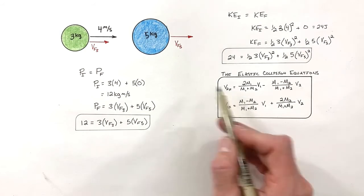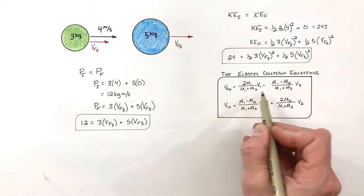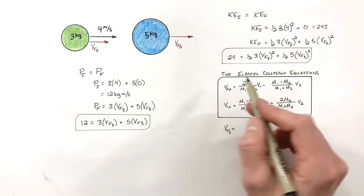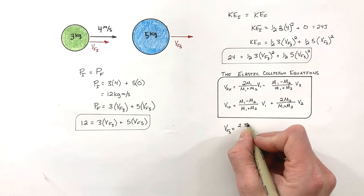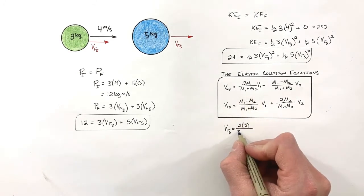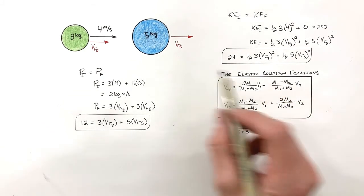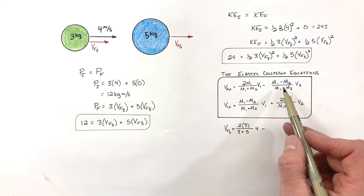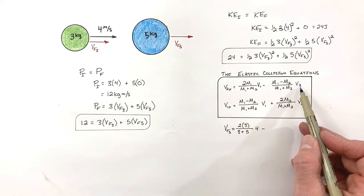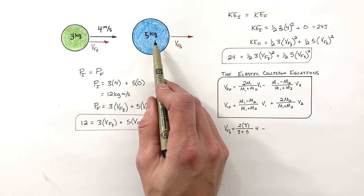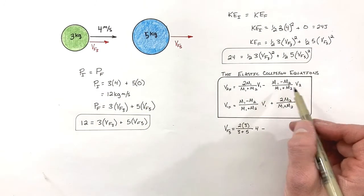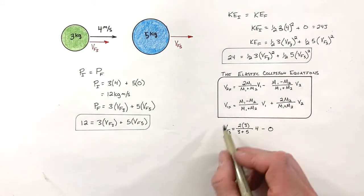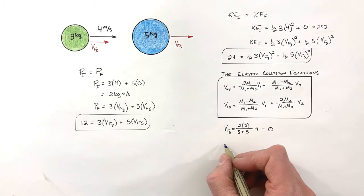Let's find the final velocity of object two — the five kilogram ball. If the five kilogram ball is object two and the three kilogram ball is object one, we plug in: two times mass one (2 × 3) over the sum of the two masses (3 + 5), multiplied by the initial velocity of object one (4 m/s). The second term has V2 in it, and since the five kilogram ball started at rest, that whole term is zero. Working this out, the final velocity of the five kilogram ball is 3 meters per second.